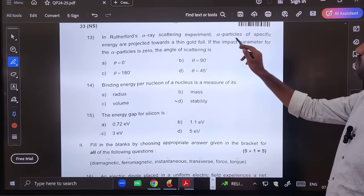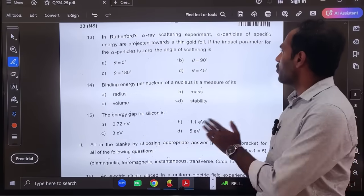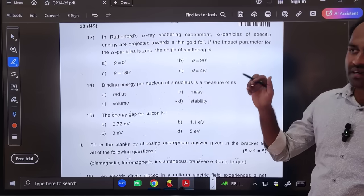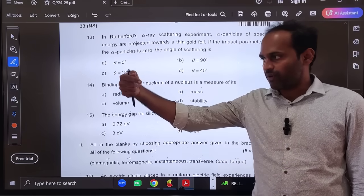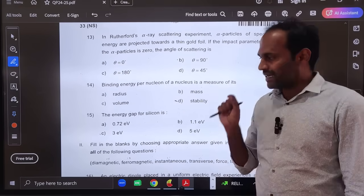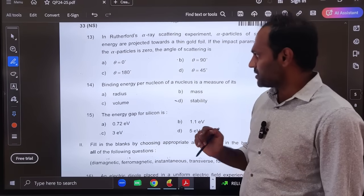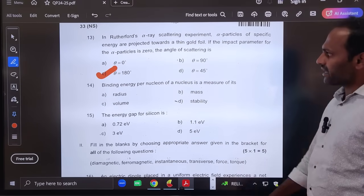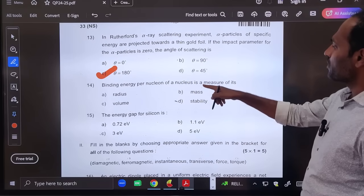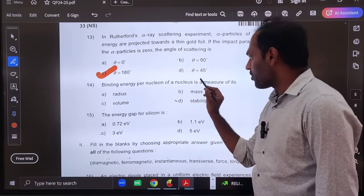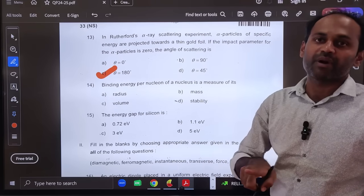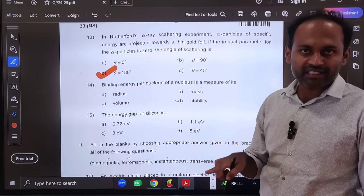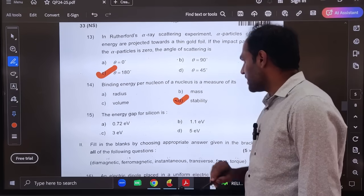Thirteenth question: In Rutherford's alpha scattering experiment, alpha particles of specific energy are projected towards the gold foil. If the impact parameter for the alpha particle is 0, then angle of scattering. See, if impact parameter is 0, alpha particle is just traveling along the straight line joining the center of the nucleus. That is why it will get rebounced. Rebounced means the angle of scattering is 180 degrees, option C is correct. Binding energy per nucleon of nucleus is measure of specific binding energy. It tells us about the stability. Option D is correct, stability.